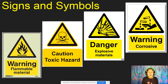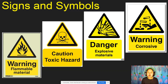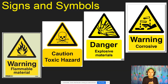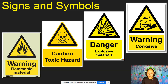How about corrosive materials? Corrosive materials are those that can cause burns or wounds on our body when they come into contact with it. So we have the different signs and symbols for dangerous materials.